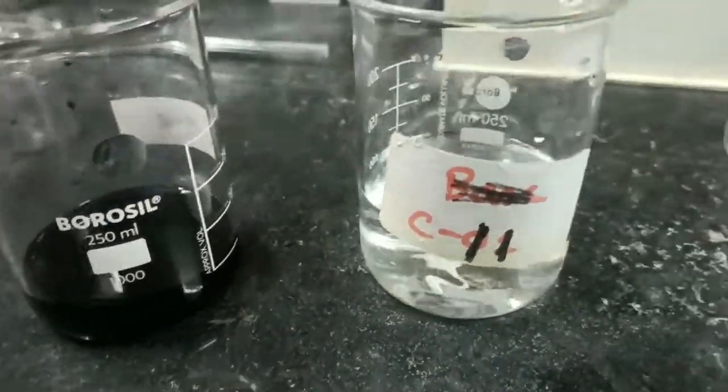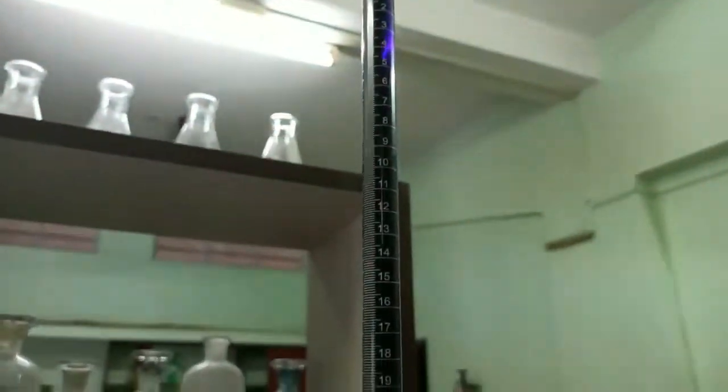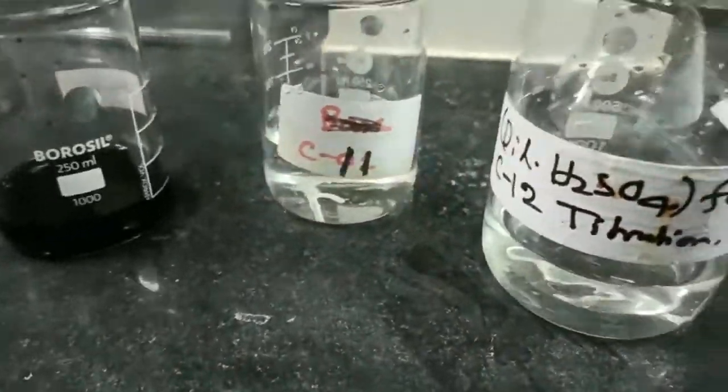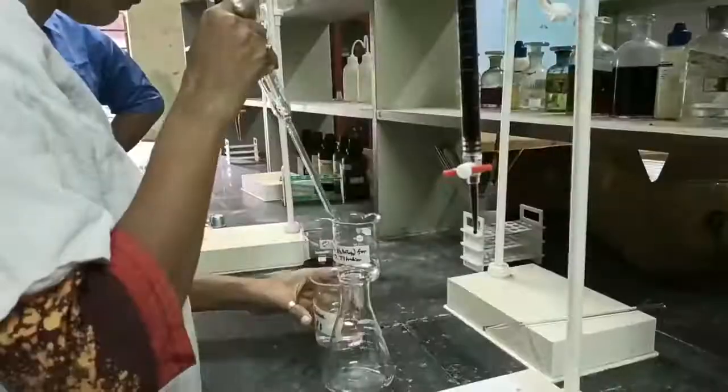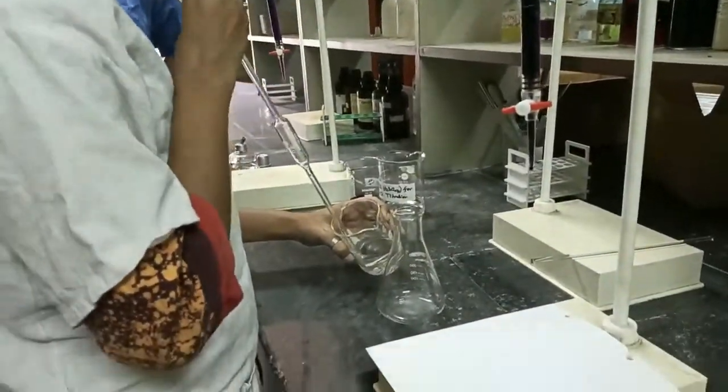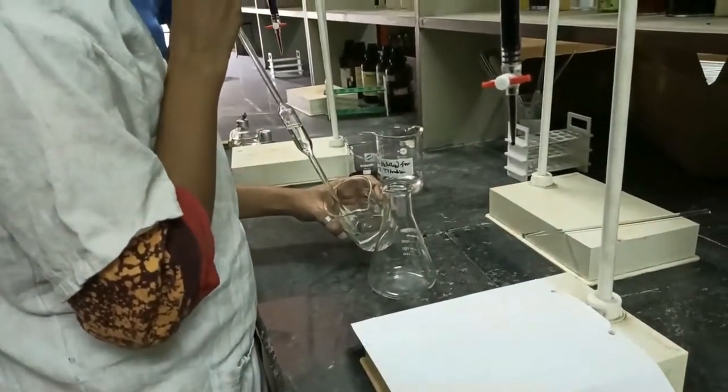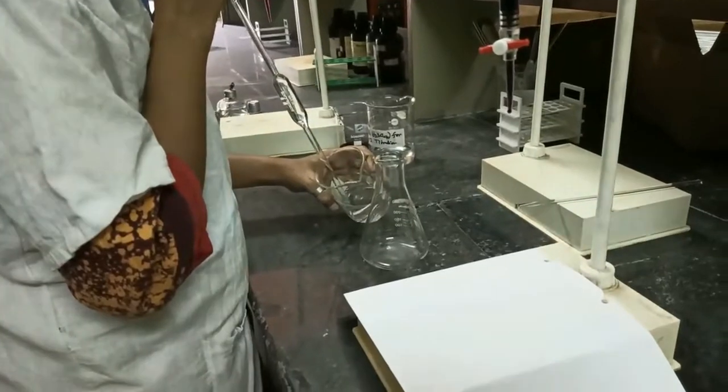We have dilute sulfuric acid. Already the burette is filled up with C10 solution. This titration is based on permanganate and oxalic acid redox reaction, acid catalyzed. So today our titration is based on the redox reaction among potassium permanganate and oxalic acid. It's also permanganometry and here potassium permanganate is a self indicator. So we are not taking any indicator from outside.